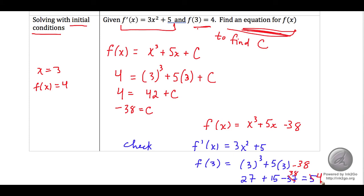There we go. Now that would work. 27 plus 15 is 42 minus 38 is 4, our final answer.